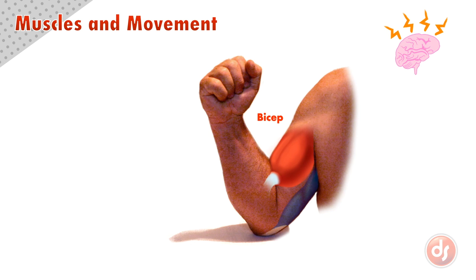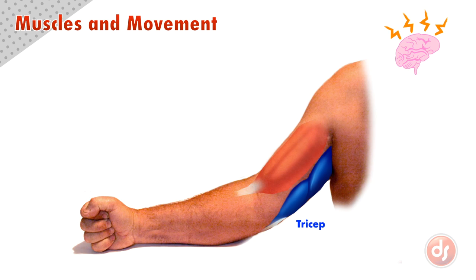If we have a muscle that has one action, we generally have one that will do the opposite. Another electrical impulse into the tricep will contract those fibers, pulling on the opposite side of the lower arm and will slam it back down.